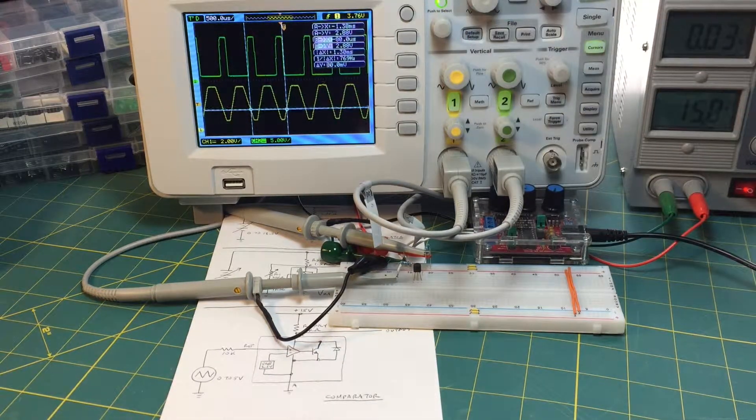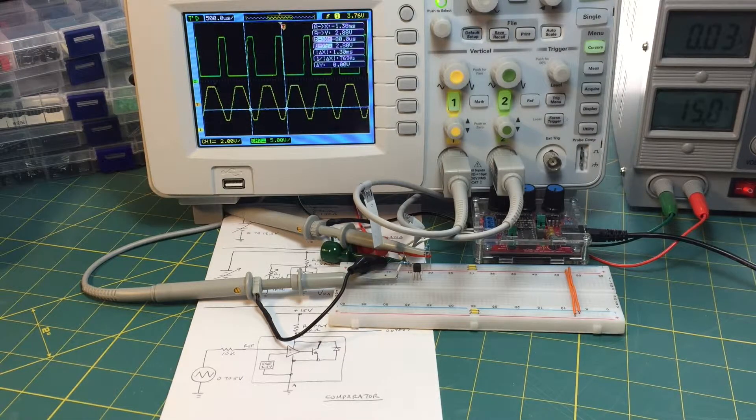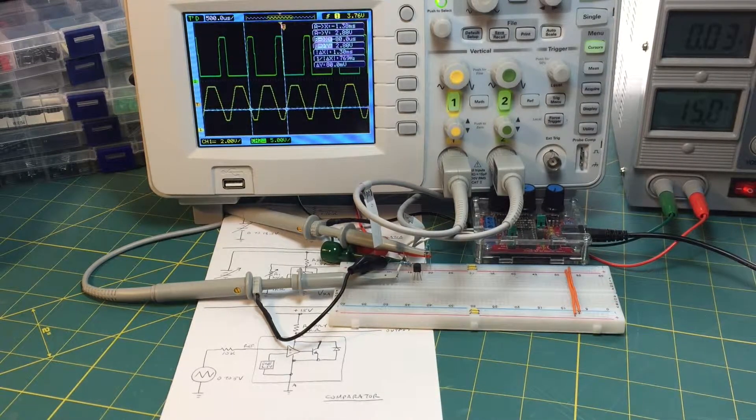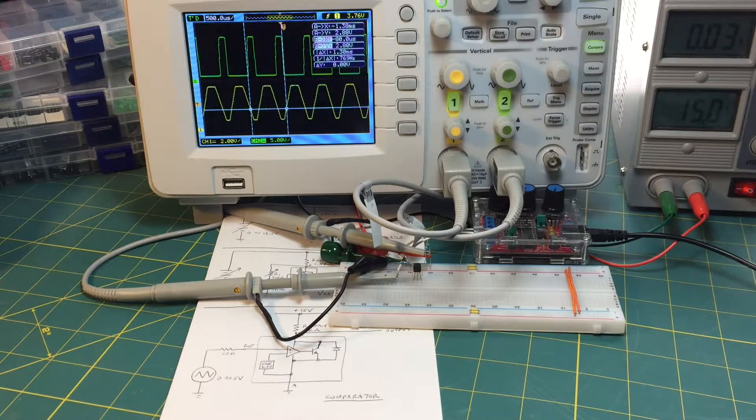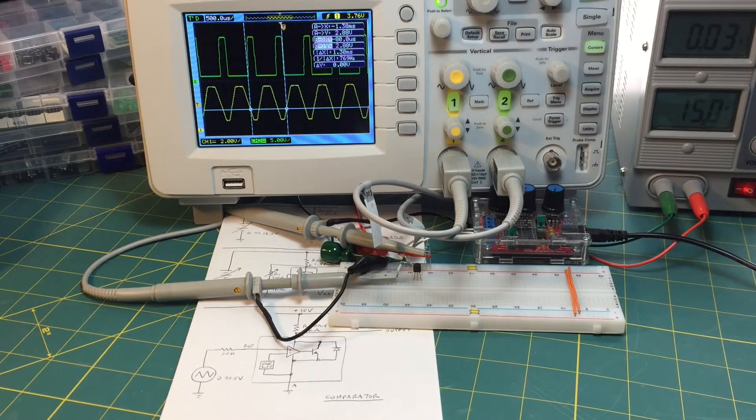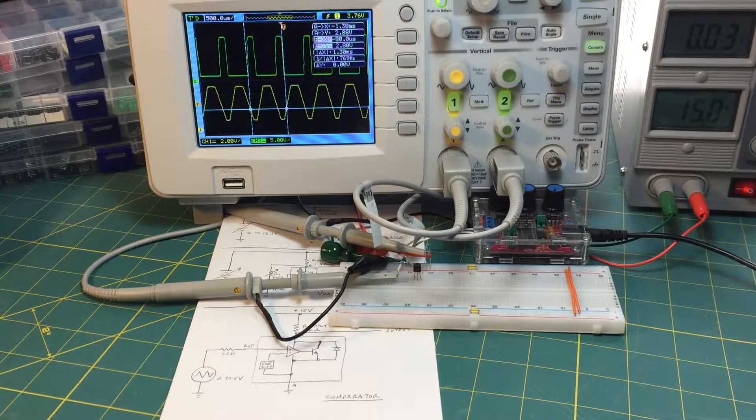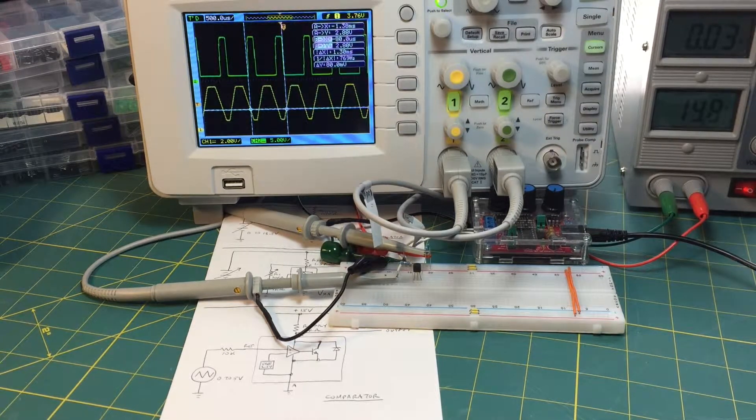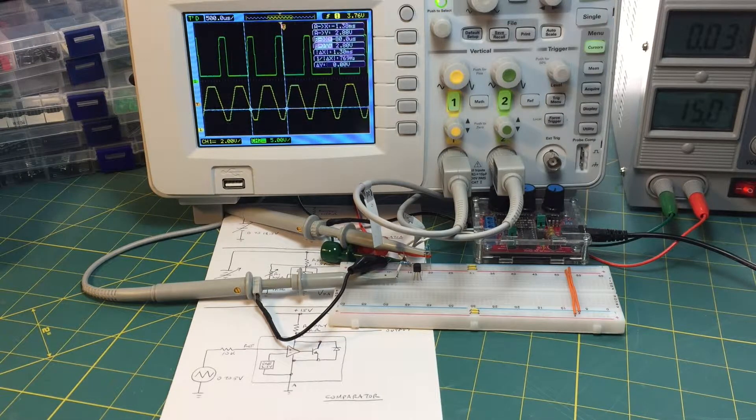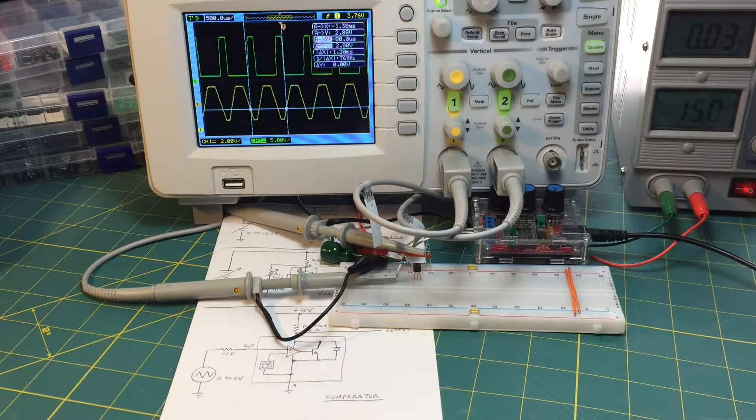Now in the TI data sheet for this part they have a recommended applications circuit for the comparator configuration and they take this output, this 2 volt to whatever output, they feed it through a voltage divider and they take the output of the voltage divider and then they feed a logic gate input with that. So it's just a way to take this kind of shifted output and condition it so you can feed it into your logic and do something useful with it downstream.